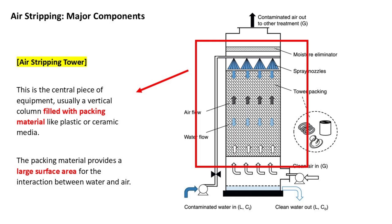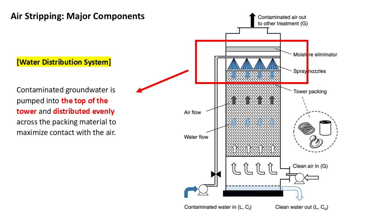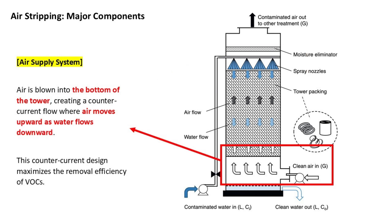Now let's take a look at the major components of a typical air stripping system. The air stripping tower is the central piece of equipment, usually a vertical column filled with packing material like plastic or ceramic media. The packing material provides a large surface area for the interaction between water and air. The water distribution system pumps contaminated groundwater into the top of the tower and distributes it evenly across the packing material to maximize contact with the air. The air supply system blows air into the bottom of the tower, creating a counter-current flow where air moves upward as water flows downward. This counter-current design maximizes the removal efficiency of VOCs.